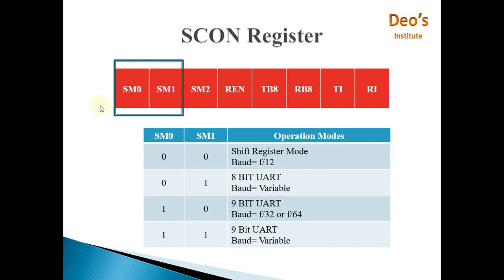The first two bits are operating mode bits. If SM0 and SM1 are both 0, it is Mode 0, called Shift Register Mode. The baud rate is F/12, that is the crystal oscillator frequency divided by 12. The crystal oscillator frequency is 11.0592 MHz. In this basic mode, all 8 bits from SBUFF are copied and transmitted bit by bit through the TXD pin. In receive mode, the RXD pin receives data bit by bit and stores it in SBUFF. No separate start bit or stop bit is used.